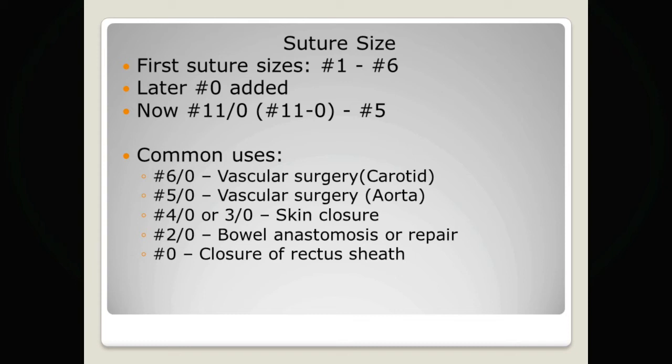These numbers are related to the diameter of the suture, but the diameter for, say, a 2-0 suture would depend on whether it is a monofilament or a braided suture. Therefore, it is more important to know the different sizes in terms of 2-0 or 3-0 rather than the exact diameter.